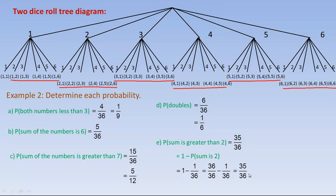Sometimes when you have one very small minor event excluded, it's easier to do one minus the probability of it not happening rather than counting everything up. And that's the end of the tutorial.